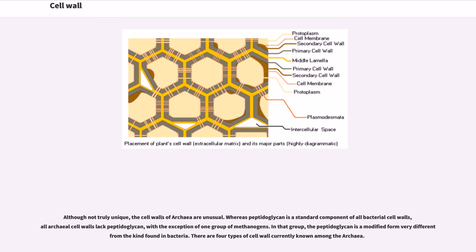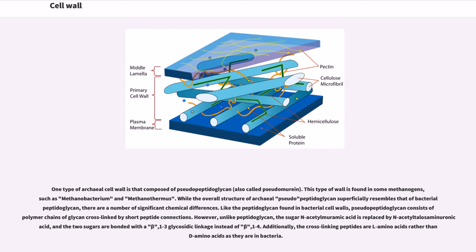Although not truly unique, the cell walls of archaea are unusual. Whereas peptidoglycan is a standard component of all bacterial cell walls, all archaeal cell walls lack peptidoglycan, with the exception of one group of methanogens. In that group, the peptidoglycan is a modified form very different from the kind found in bacteria. There are four types of cell wall currently known among the archaea. One type of archaeal cell wall is that composed of pseudopeptidoglycan, also called pseudomurein. This type of wall is found in some methanogens, such as Methanobacterium and Methanothermus. While the overall structure of archaeal pseudopeptidoglycan superficially resembles that of bacterial peptidoglycan, there are a number of significant chemical differences.